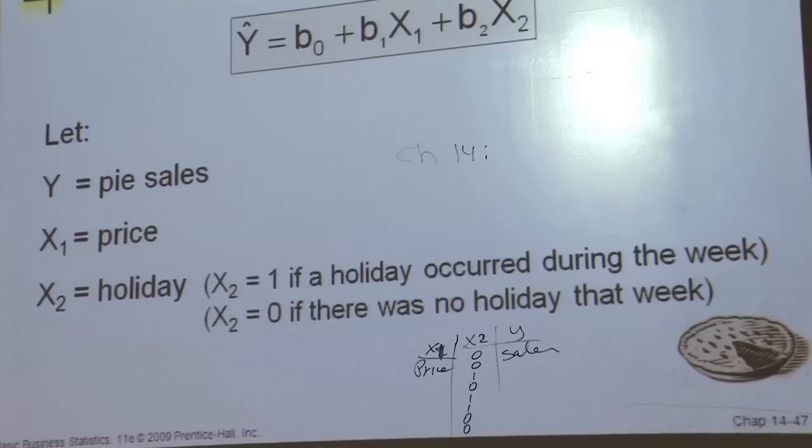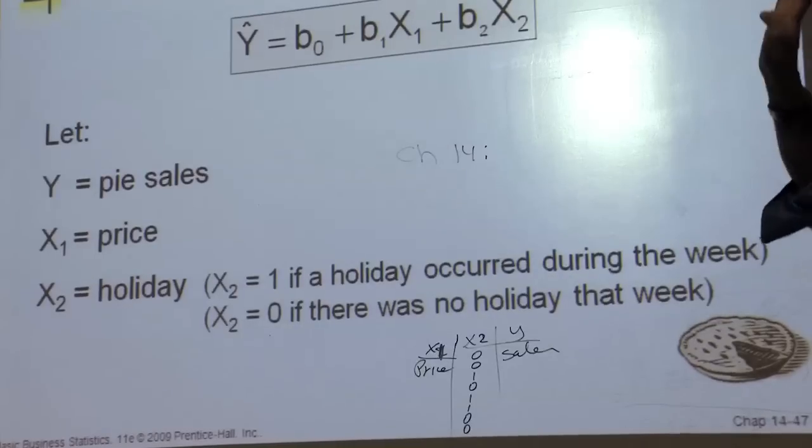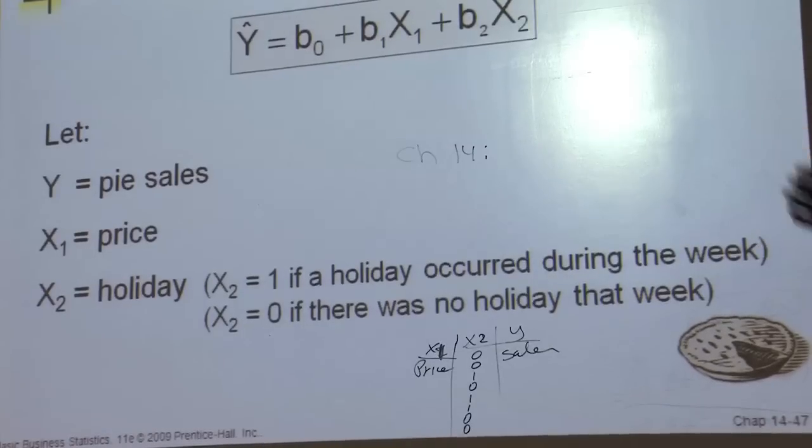So it turns out if you have three categories you got to use two dummy variables, these are called dummy variables, and with four categories you got to use three dummy variables, always one less, and there's a whole little technique how to set up the dummy variables.